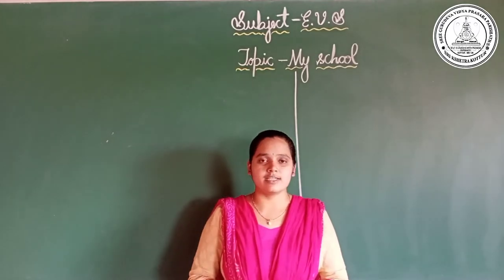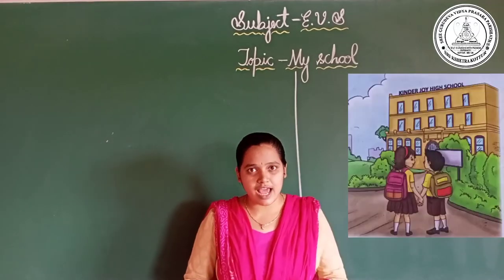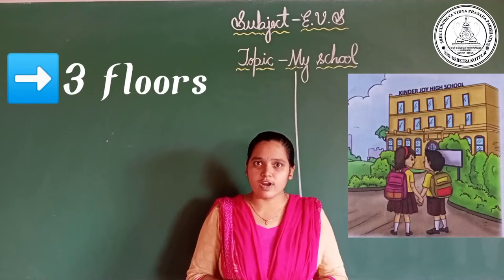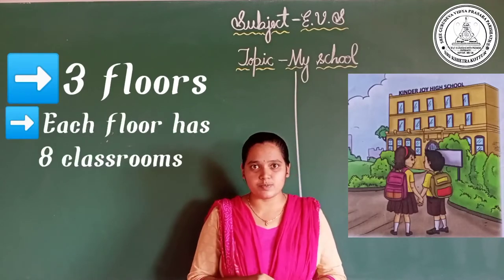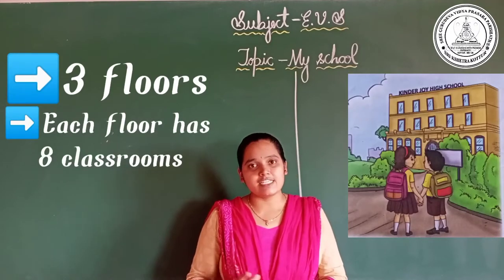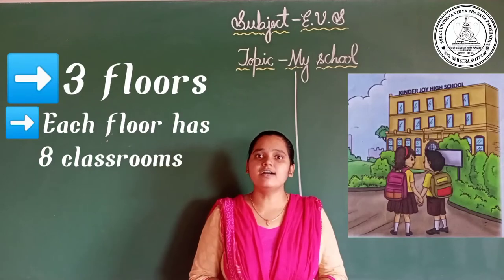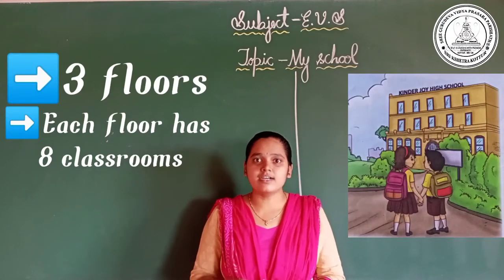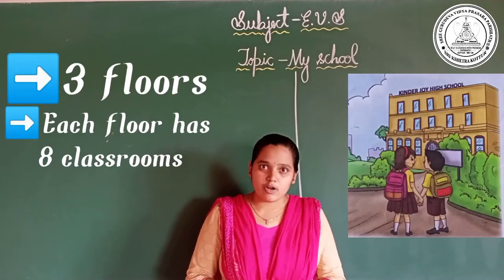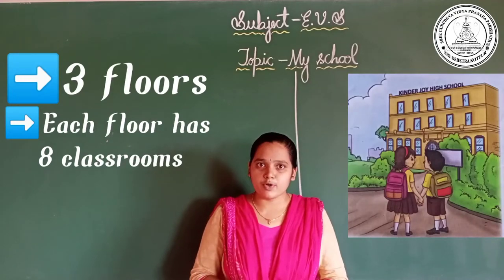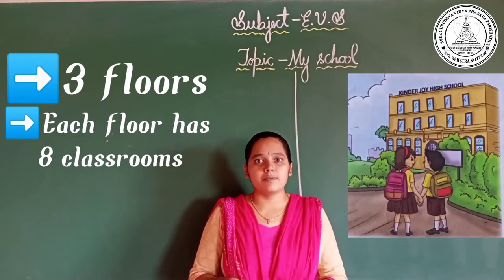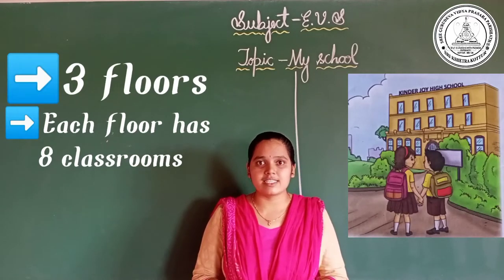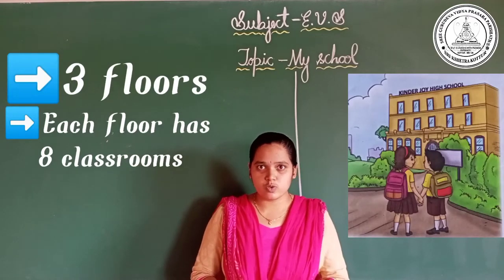How is his school? His school has three floors, and each floor has eight classrooms. Each floor has eight classrooms, and totally his school has three floors. And also his school has a computer lab, music room, and playground. All these things are there in Alok's school.